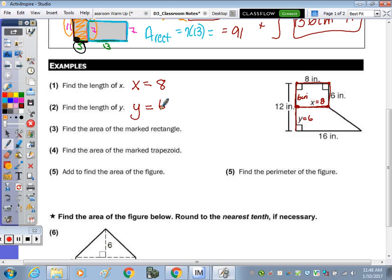Find the area of the marked rectangle. The area of a rectangle is length times width. What are our two dimensions that we're multiplying? It's an 8 by 6 rectangle. That dimension of 12 is going from the very top to the very bottom. So we just broke it up into a rectangle and a trapezoid. So the area of the rectangle is going to be 6 by 8, which is 48 inches squared.